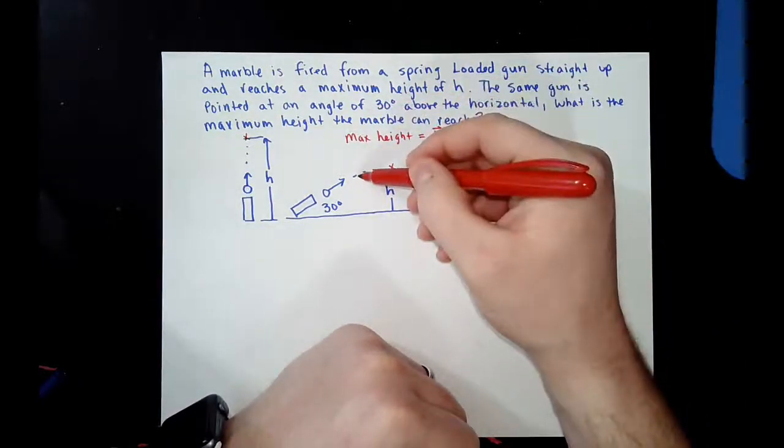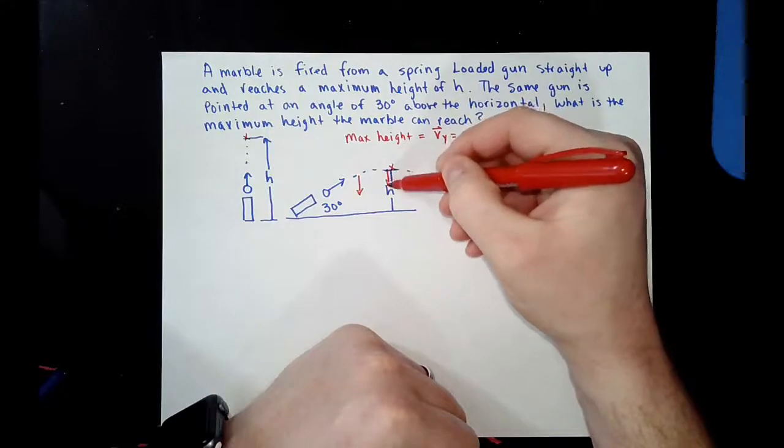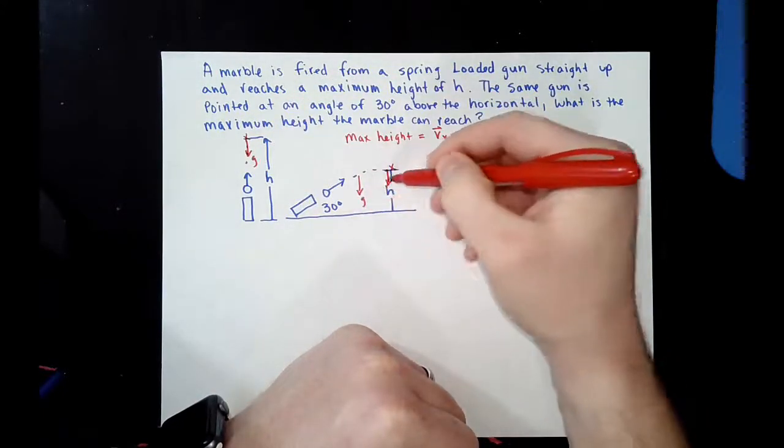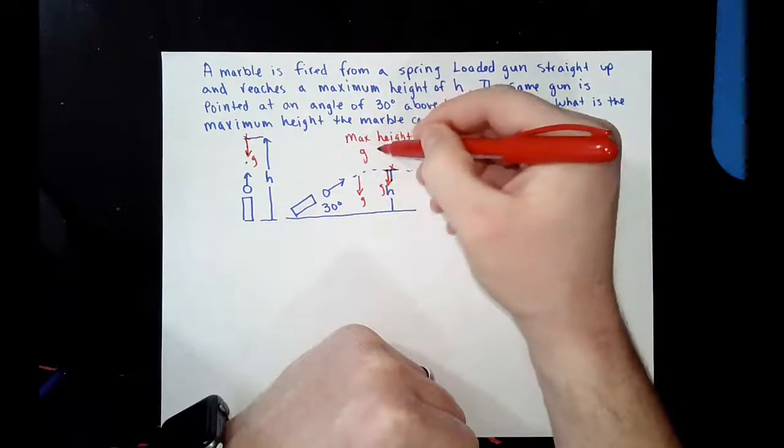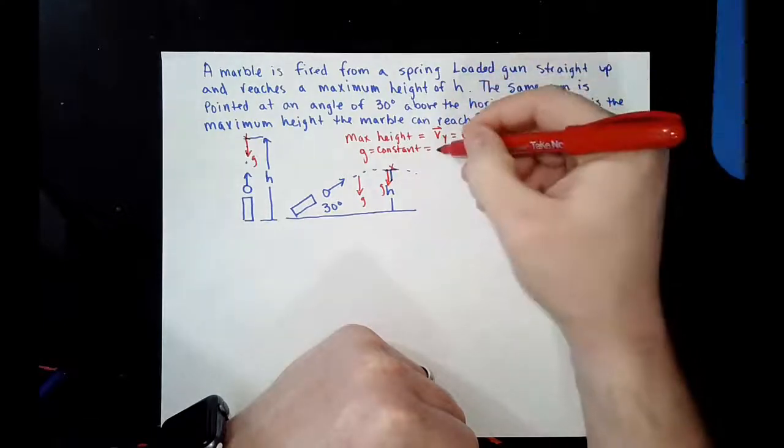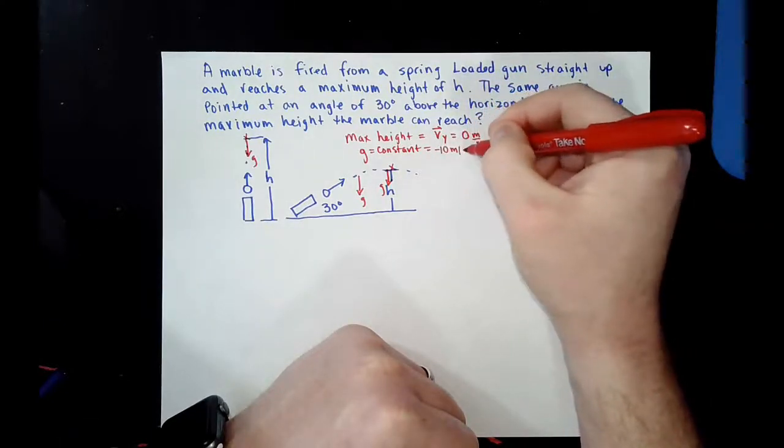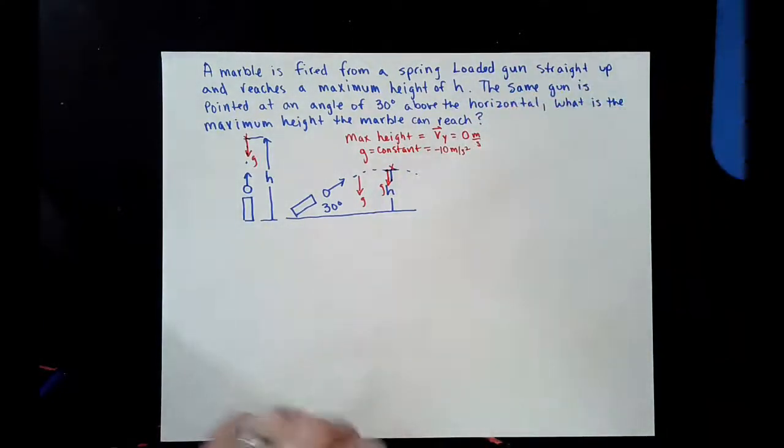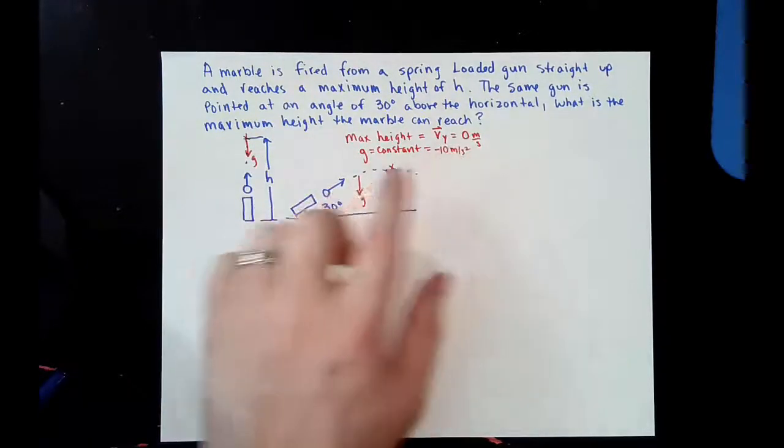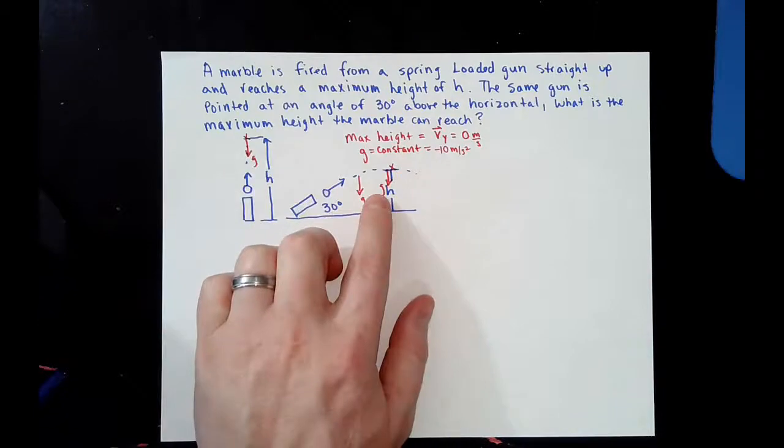Now, in both situations as well, the gravity at max height, so our gravitational acceleration, gravity is constant at negative 10 meters per second squared. The max height of the velocity is 0. We know the gravitational accelerations in both situations will be 0.